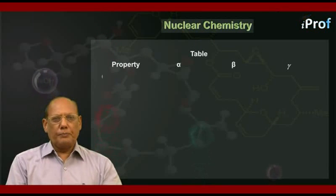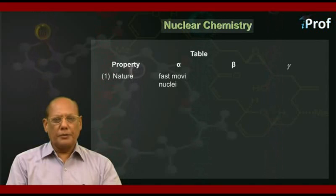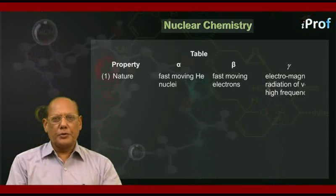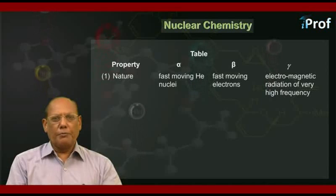The first property is nature. Alpha particles are fast-moving helium nuclei. Beta particles are fast-moving electrons. Gamma radiations are electromagnetic radiations of very high frequency.